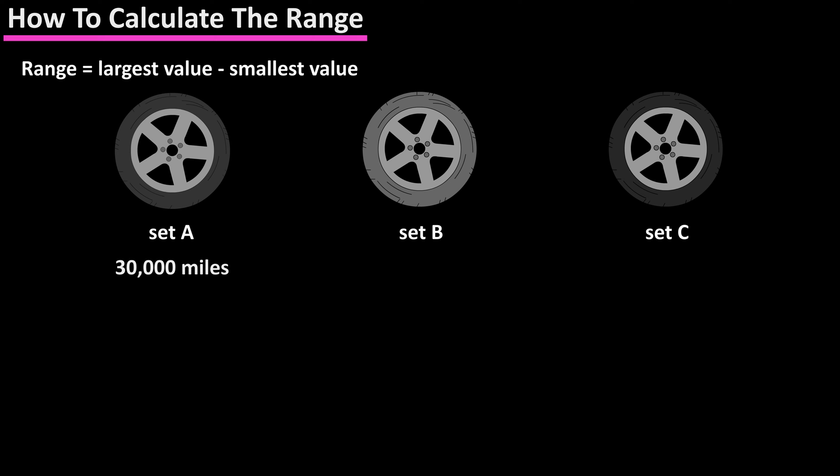Set A which had an average life of 30,000 miles, Set B had an average life of 30,000 miles, and set C which also had an average life of 30,000 miles. All of the same price and have the same average lifespan.